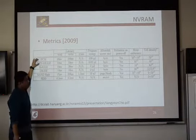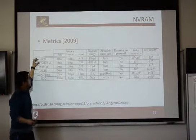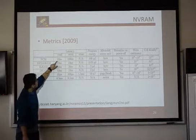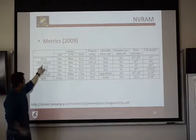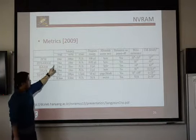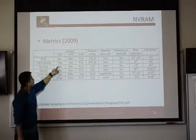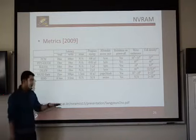These NVRAM technologies are probably a lot better now in 2013, 2014. As of 2009, phase change memory takes 20 nanoseconds to read and 100 nanoseconds to write. Spin transfer torque, three years ago, four years ago, it was about the same speed as DRAM during that time.